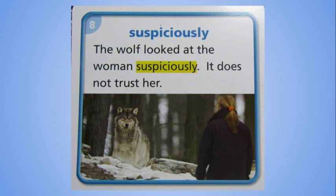Our last word is suspiciously. We have a base word, suspicious, with the suffix -ly. The wolf looked at the woman suspiciously. It does not trust her. That second sentence is a big context clue. If you act or speak suspiciously, you look or sound as though you don't trust someone or something. You can see why a wolf would be looking at someone suspiciously if they came near their home. Can you think of a time someone's looked at you suspiciously? When I was a kid and I would tell my mom I'd already cleaned my room, she'd look at me suspiciously. Have you ever snuck a cookie from the cookie jar and your parents look at you suspiciously?